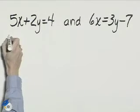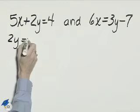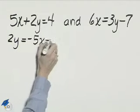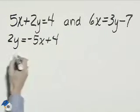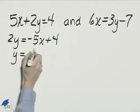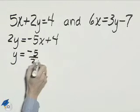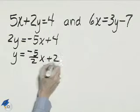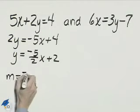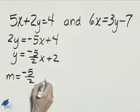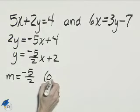Subtract 5x over here. We'll have 2y equals negative 5x plus 4. Divide everything by 2. That gives us y equals negative 5 halves x plus 2. Here the slope is negative 5 halves, and the y-intercept is 0,2.